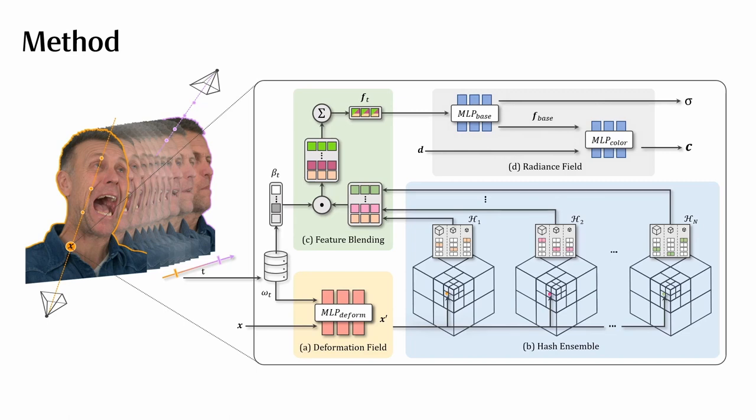Taken together, the deformation field facilitates modeling rough motion, such as head movements, while the hash ensemble adds fine details to the reconstructions.